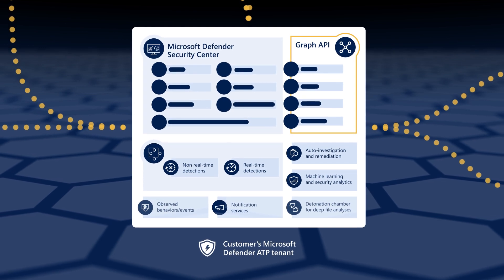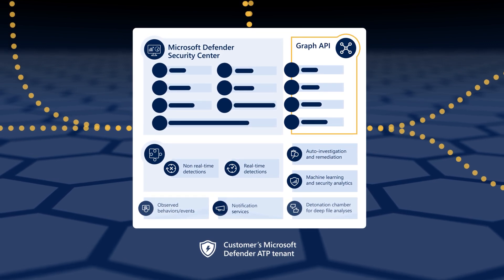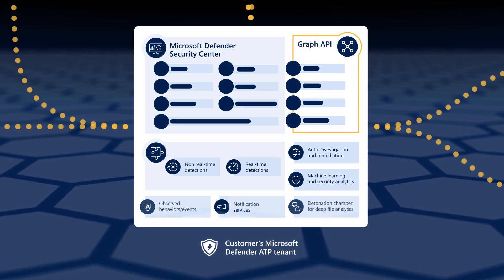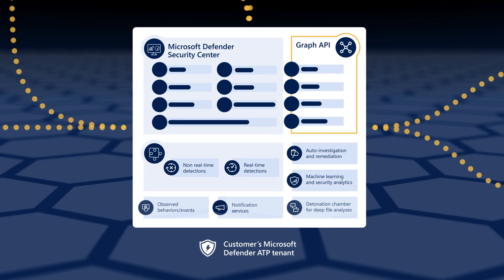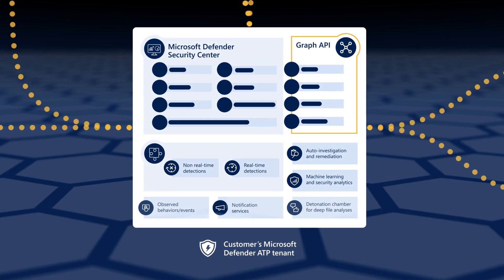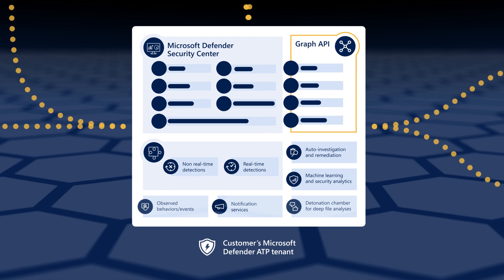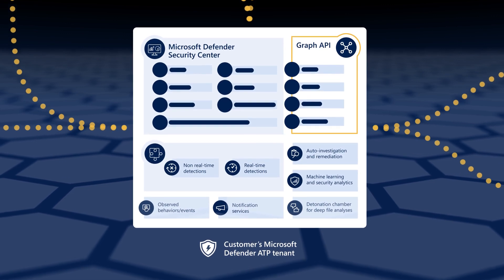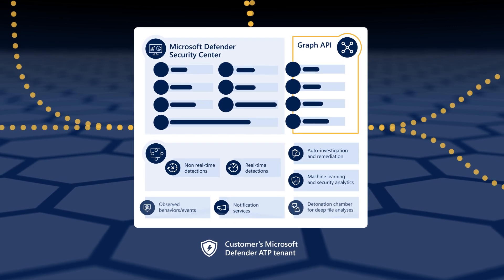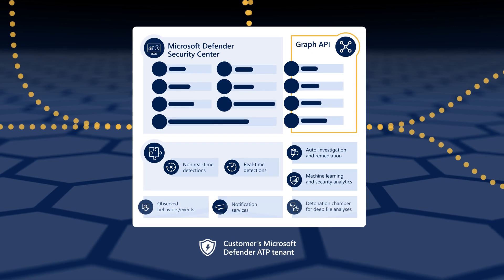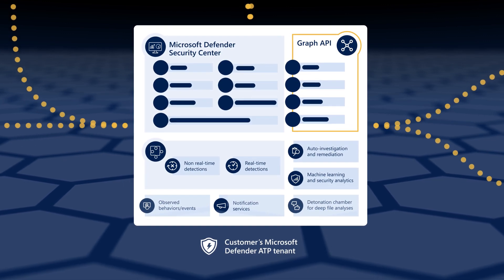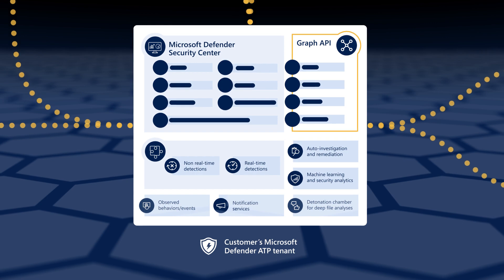When turned on, our built-in automation runs when the service generates alerts, starting automated threat investigations and remediations. Additionally, part of each customer's tenant is a detonation chamber for deep file analysis — a sandbox where security teams can upload suspicious files and get a readable report back. This is an incredibly powerful, yet safe way to investigate potential threats.